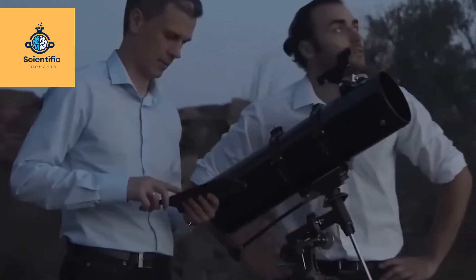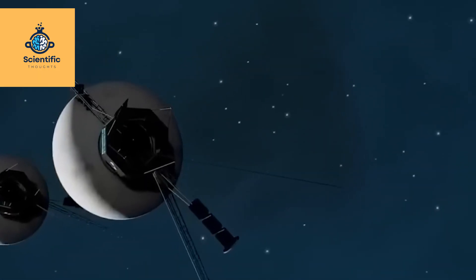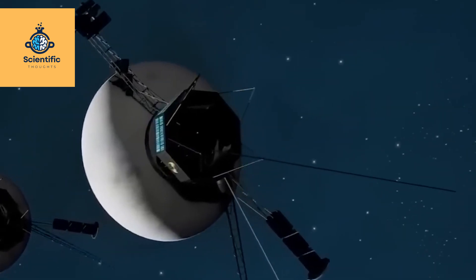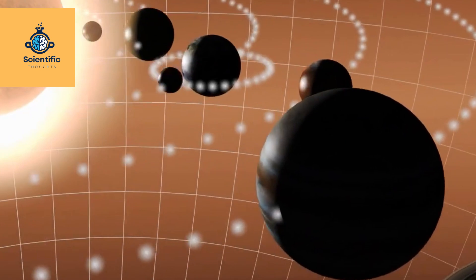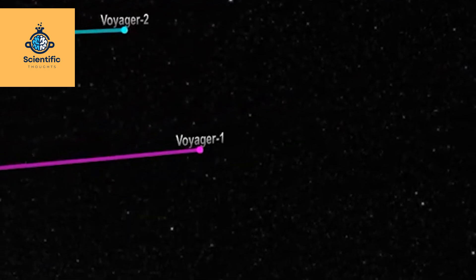Voyager 1, launched by NASA on September 5, 1977, is now exploring interstellar space for the first time. This spacecraft, a symbol of human ambition, has been on an epic journey for over four decades, revealing the secrets of our solar system.